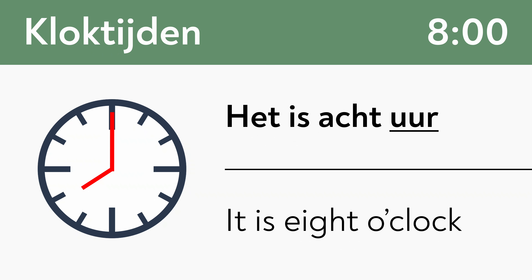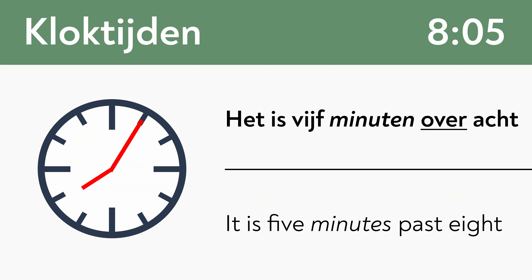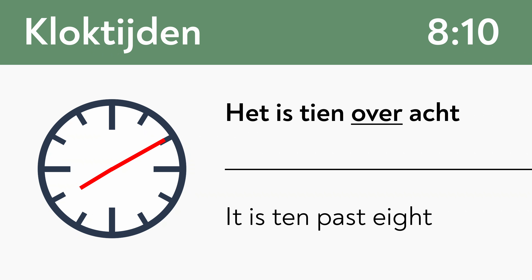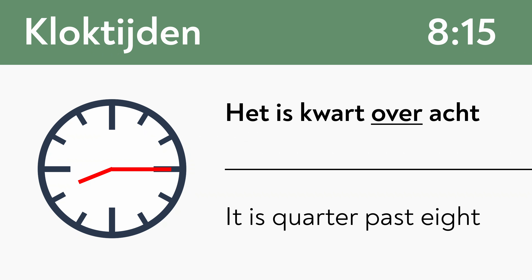Now let's constantly change the minute hand by five minutes and see what happens. 'Vijf minuten over acht.' As you can see here, I don't use 'uur'. 'Minuten' is optional — it's also fine to keep it short and say 'vijf over acht'. In everyday Dutch, people usually try to keep it short, so we will continue that way too. 'Tien over acht.' 'Kwart over acht.'